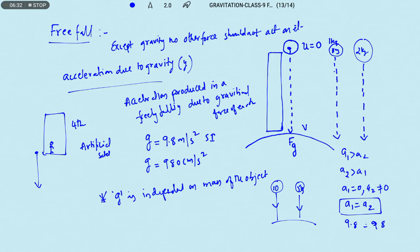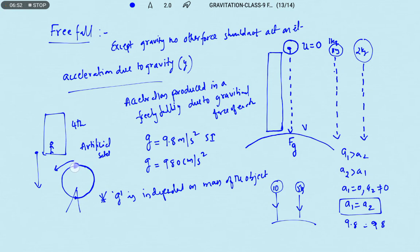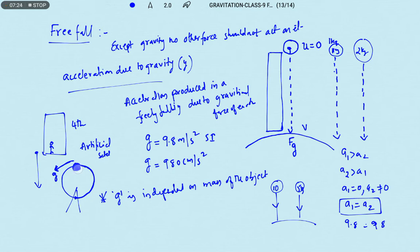That is why astronauts wear particular types of suits when they are in artificial satellites. In the same way, in a giant wheel, if you are moving from the bottom to the topmost point, when you are coming down from that instant you feel that you are going to fall suddenly. At the topmost point, only the gravitational force is acting on you and no other force — that's why it is a very dangerous point and most of us panic at that position.